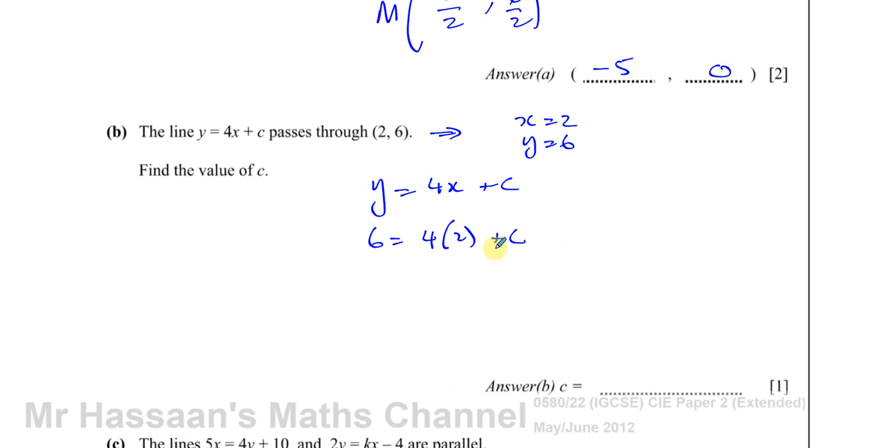Now, for this to be equal, we can find the value of C. You've got 6 = 8 + C. That means C has to be -2. C is 6 - 8. So when C is -2, then this point is on this line.